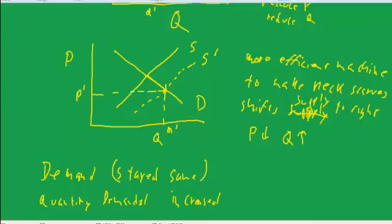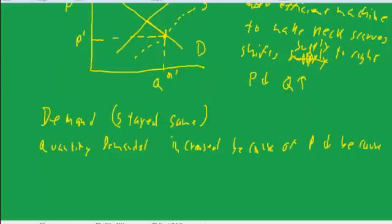It's important to remember this. Demand, as in the expression of the demand curve, stayed the same. The quantity demanded increased because of the supply shift, or because of the price down, which in turn was because of the supply shift.